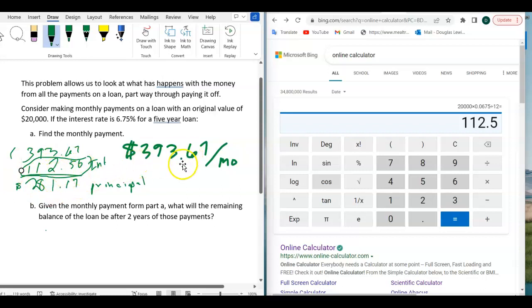But that's just one month right there. Remember, the $393 gets split up into different parts.